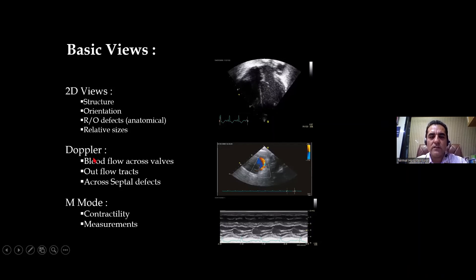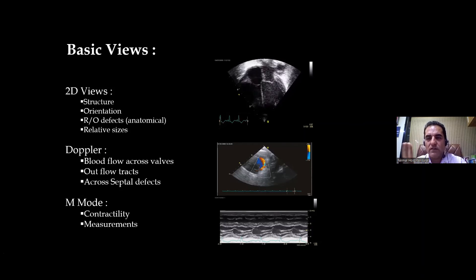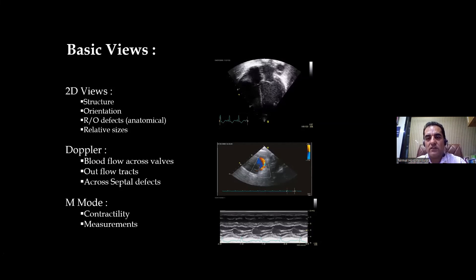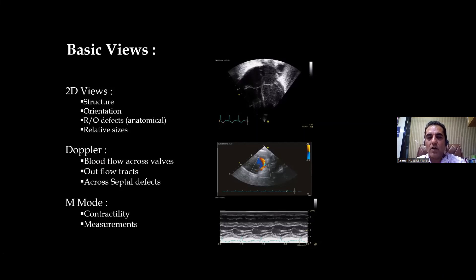The next thing we do is Dopplers, which are of three types: one, color Doppler; two, pulse wave Doppler; three, continuous wave Doppler. We use these to see the color flow and to measure the velocity of blood flow through various structures — like flow across the mitral and tricuspid valves, aortic valves, pulmonary valves, or flow through the aorta, pulmonary artery, or any defect across an interventricular septal defect or interatrial septal defect.